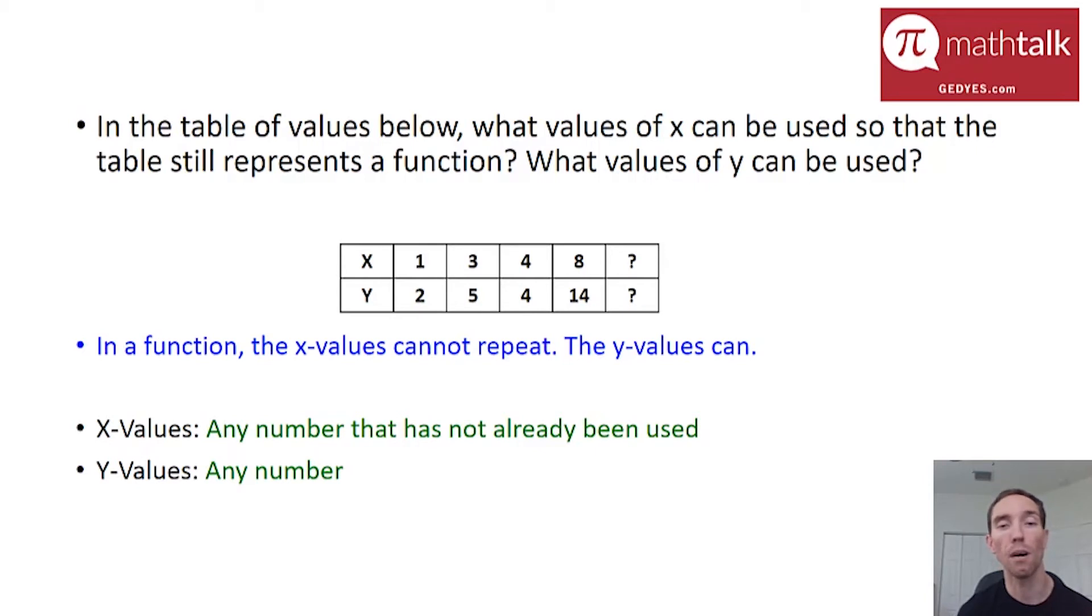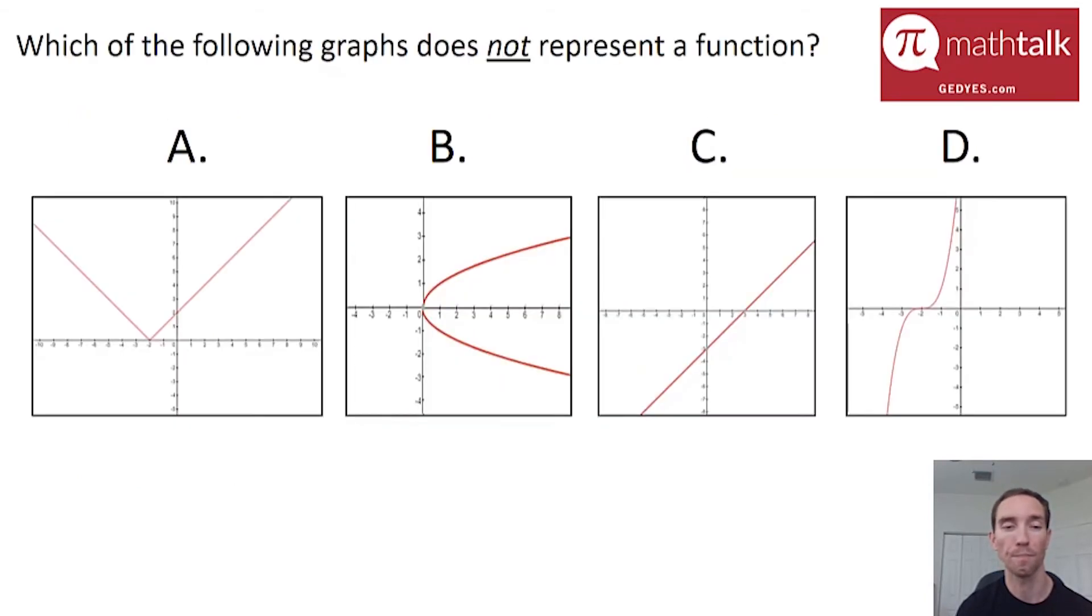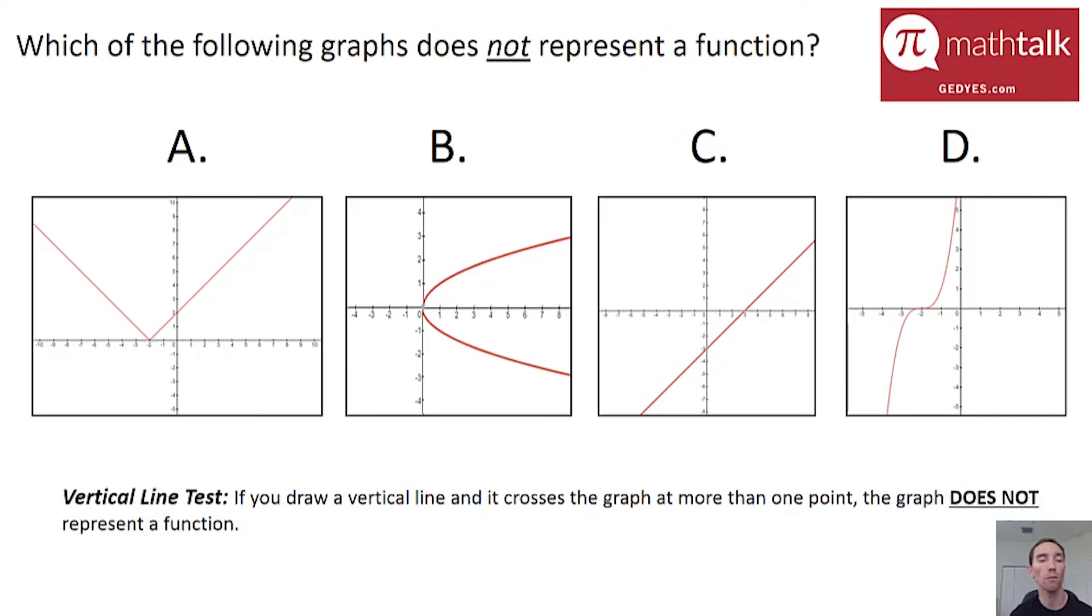All right. So let's look at one more example on functions. This one asks you the question, which of the following graphs does not represent a function? And so when you're looking at graphs and representing whether they represent functions or not, there's literally a quick trick to use. And that trick is, it's called the vertical line test. If that vertical line crosses your graph at more than one point at the same time, then it is not a function.